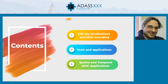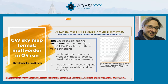The next observational run from LIGO, Virgo, and KAGRA will most probably start at the beginning of 2022. All-sky maps will be issued in the multi-order format, which was developed by Leo Singer. Resources from LIGO and Virgo user guides are available, and multi-order is supported by several tools like dot-skymap, astropy, HEALPix, mockpy, and the latest version of Aladin — Aladin version 11.